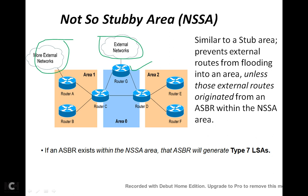The next thing is: if an ASBR exists within an NSSA area — for example if we configure area 1 as an NSSA — that ASBR will generate Type 7 LSAs. I have already uploaded a separate video explaining Type 7, Type 5, Type 4, Type 3, Type 2, and Type 1 LSAs. So the key point is this router will generate Type 7 LSAs.